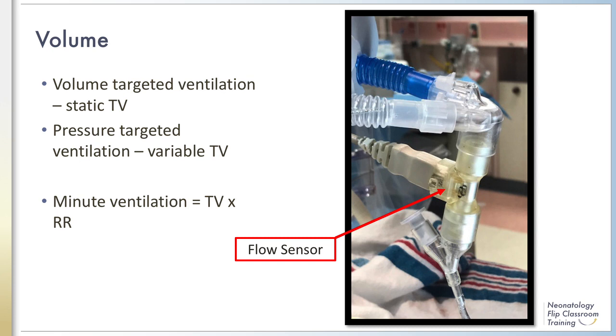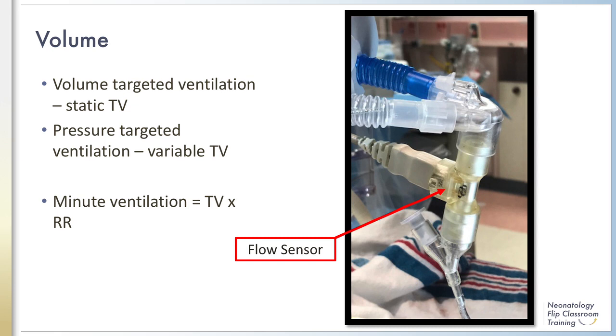Minute ventilation can also be calculated by multiplying the respiratory rate by the average tidal volume. The flow sensor is usually located between the endotracheal tube and the ventilator tubing on neonatal ventilators.